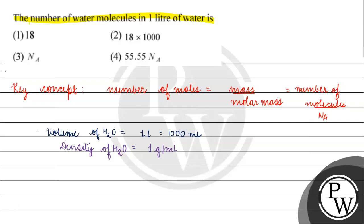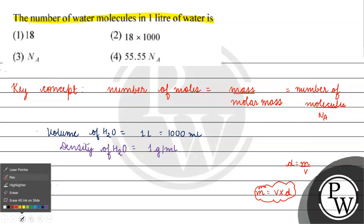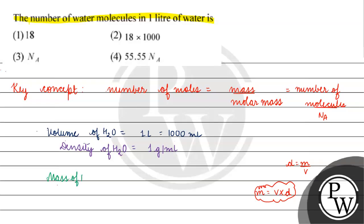So density is equal to mass by volume. So if we have mass, mass of water, then what will happen? Volume into density.